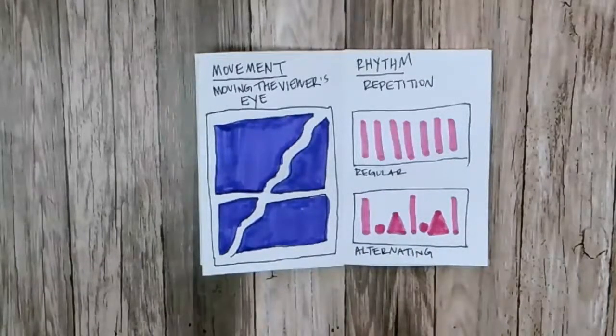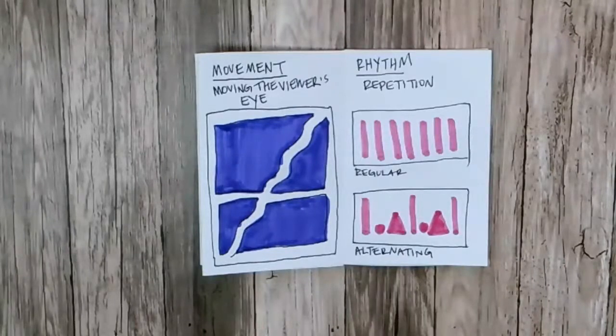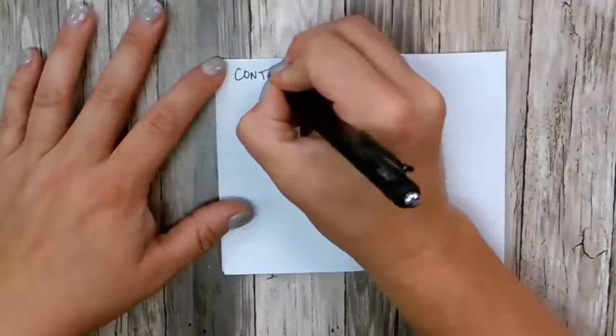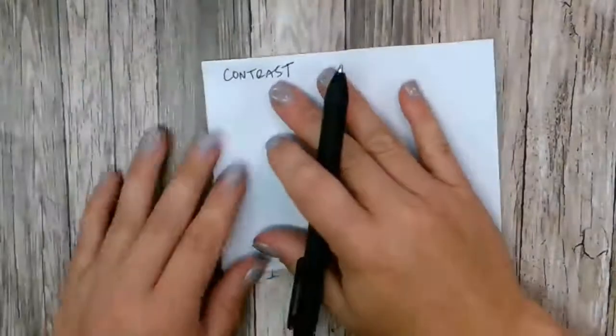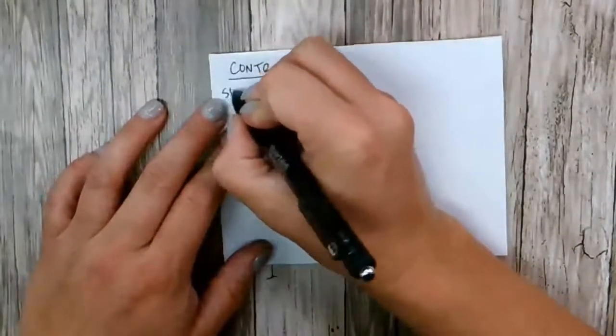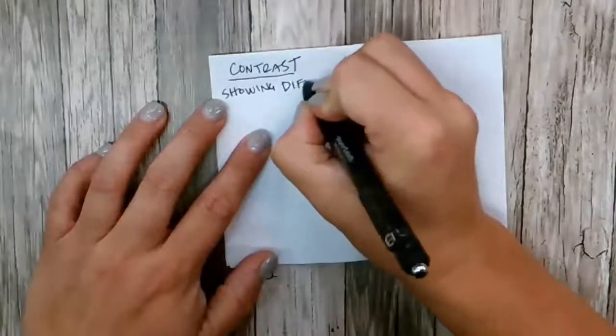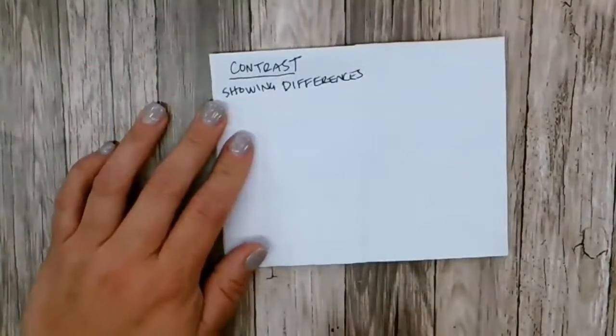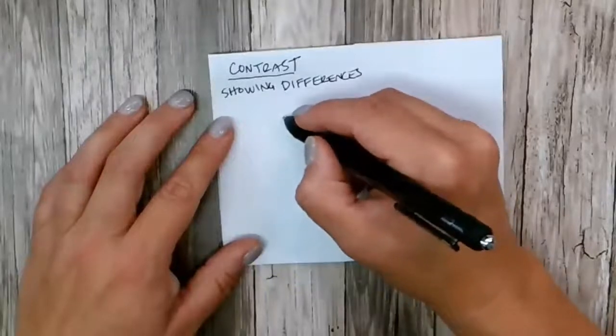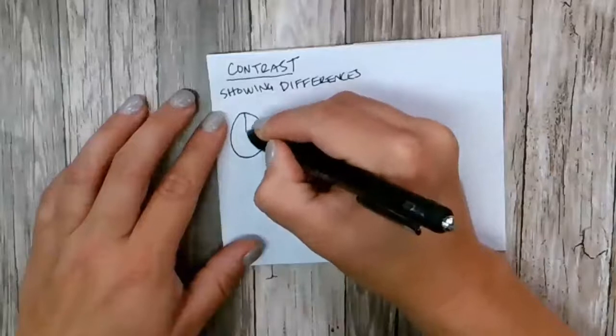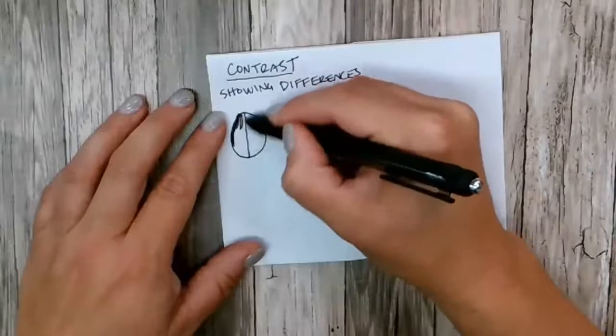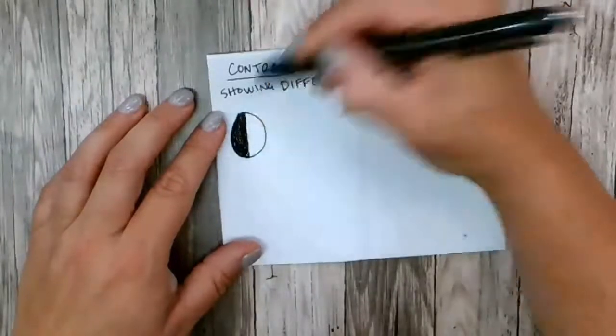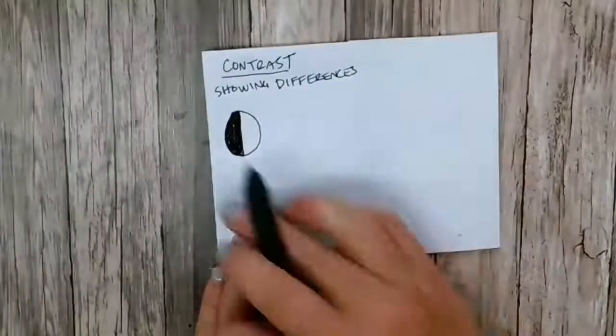The next one is contrast. Contrast is showing the differences, like variety. So you could have an egg, and you could color one part in dark, and have one part light. So that's a contrast of value.